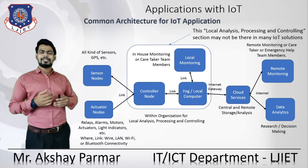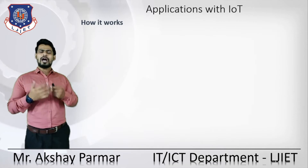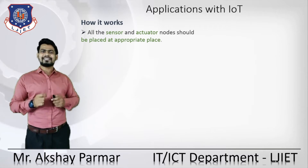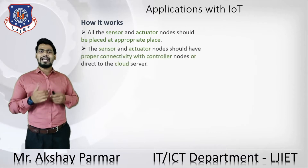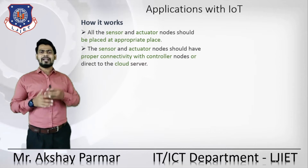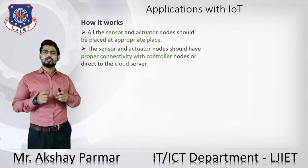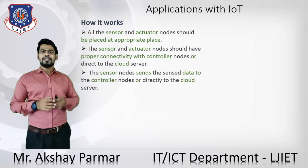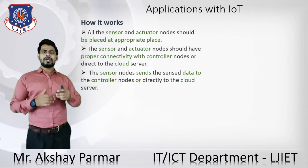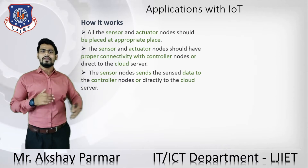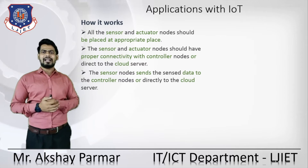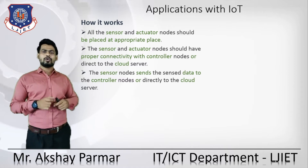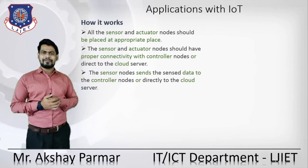Let's see the role of each module in this architecture. For sensors and actuators: all sensor and actuator nodes should be placed at an appropriate place so that we can trace the surroundings. The sensors and actuator nodes should have proper connectivity with the controller nodes, or directly with the cloud server. Without that connectivity, the sensed data will not reach the controller or the cloud server, and we cannot take any precautionary steps.